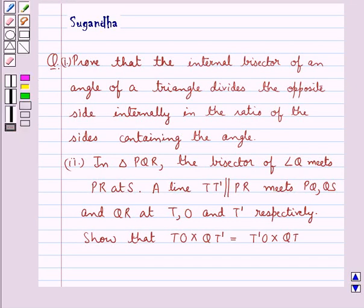Hello and welcome to the session. In this session we discuss the following question which says: Prove that the internal bisector of an angle of a triangle divides the opposite side internally in the ratio of the sides containing the angle. The second part of the question says: in triangle PQR, the bisector of angle Q meets PR at S.